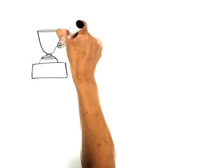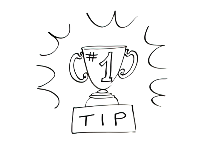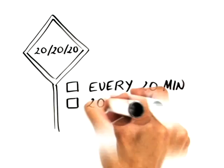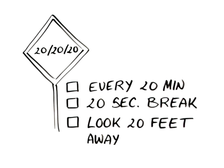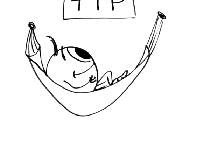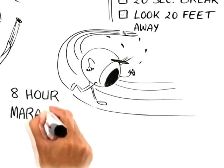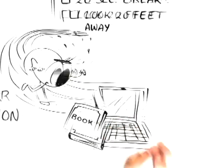One of the rules that I typically recommend, especially with our population right now that's using computers or doing a lot of reading is something called 20-20-20. Every 20 minutes, take a 20-second break, look 20 feet away. What this allows our eye muscles to do is relax so that they're not on this eight-hour marathon where they're staring at a computer or reading a book throughout the entire day.